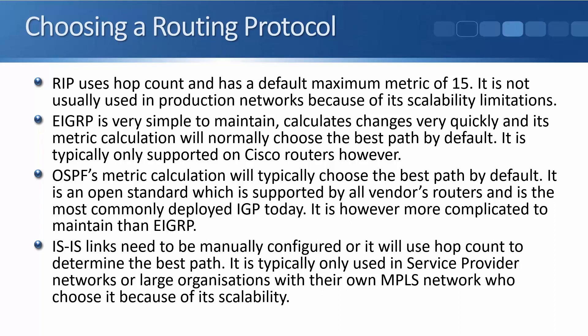OSPF's metric calculation also typically chooses the best path by default. It is an open standard supported by all vendors' routers, which is why it's the most commonly deployed IGP today, though it is more complicated to maintain than EIGRP. ISIS links need to be manually configured or it will use hop count — it's typically only used in service provider networks or large organizations with their own MPLS networks due to its scalability. So it really comes down to either EIGRP or OSPF for most organizations.